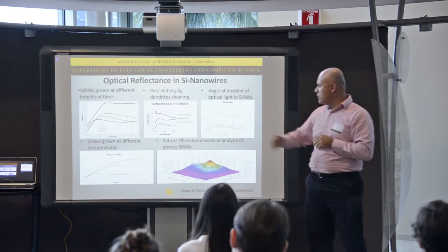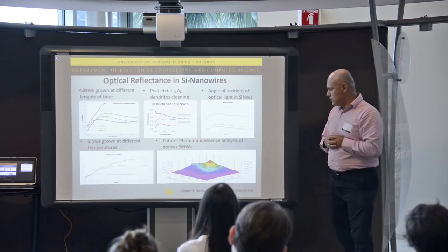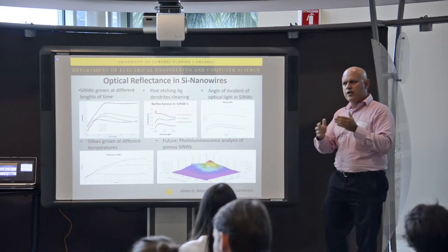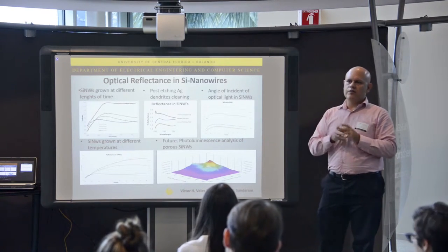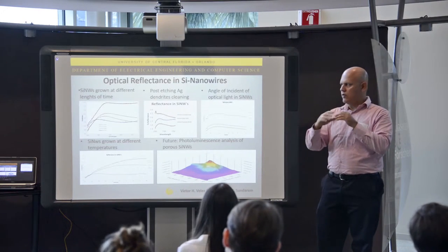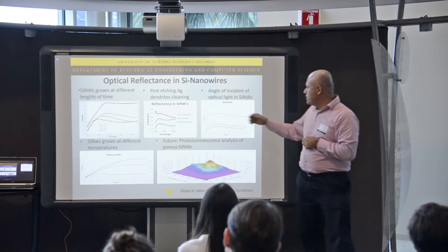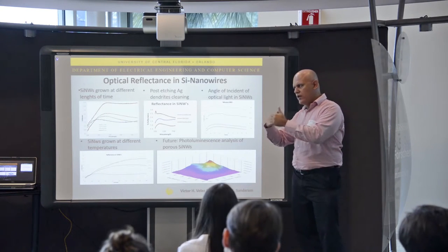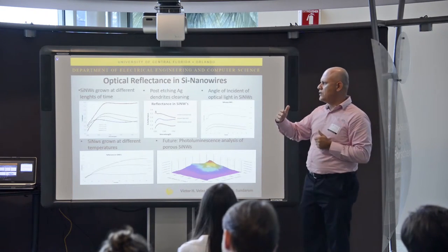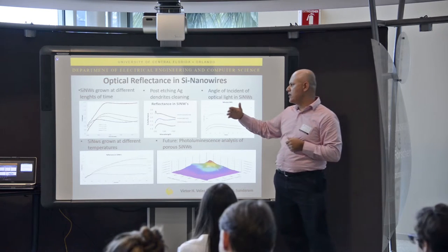At the beginning, two years ago, we started changing our concentration of the chemicals we use to grow them. Once we achieved good results changing the concentrations, we decided to go for a different process.